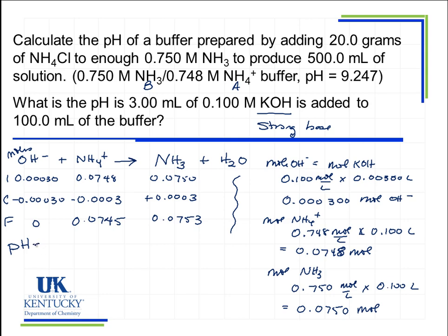pH is equal to the negative log of the Ka of the ammonium. So that's 1.0 times 10 to the minus 14 divided by 1.76 times 10 to the minus 5. That's the pKa, that whole portion here is the pKa, plus the log. We can use moles, the moles of the base is on top, so that's 0.0753, over the moles of the acid, 0.0745.